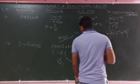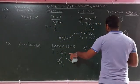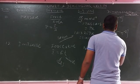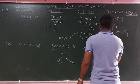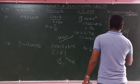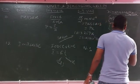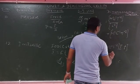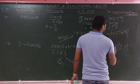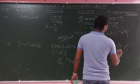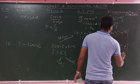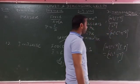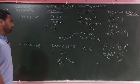Dimensional formula for impulse: force dimensional formula is M¹L¹T⁻², and time dimensional formula is T¹. Multiplying: M¹L¹T⁻² × T¹ = M¹L¹T⁻¹. So M¹L¹T⁻¹ is the dimensional formula for impulse. The SI unit of impulse is Newton-second (N·s).